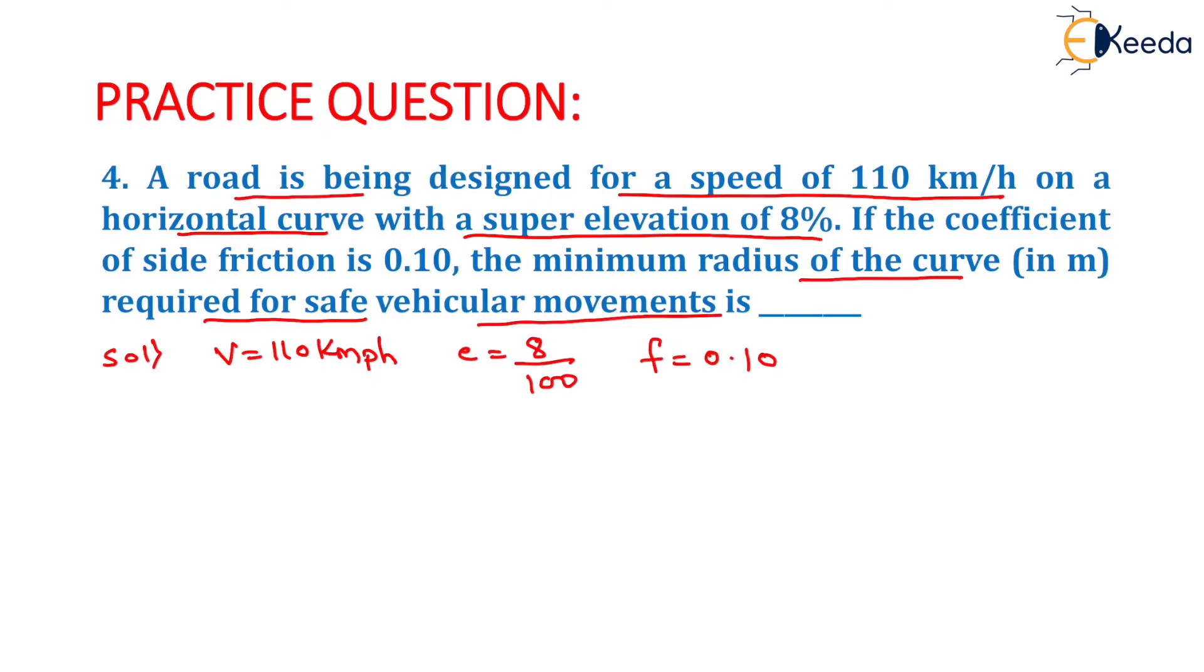Now we know the formula of super elevation, which will be E plus F equals V squared upon 127 R. On putting the value of E as 8 by 100, F as 0.10, V as 110 upon 127 R.